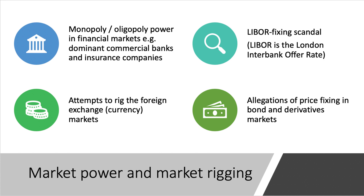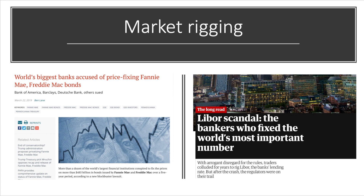Price rigging in markets is illegal because it interferes with the natural forces of supply and demand and harms consumers by inhibiting competition. We've seen plenty of examples: the London Interbank Offer Rate (LIBOR) fixing scandal, where they fixed the rate of interest; allegations of fixing in foreign currency markets and bond markets. Just recently, the world's biggest banks were accused of price fixing in the bond market. Somebody went to jail for the LIBOR fixing scandal, and the London Interbank Offer Rate is now being phased out in part as a result of that scandal.